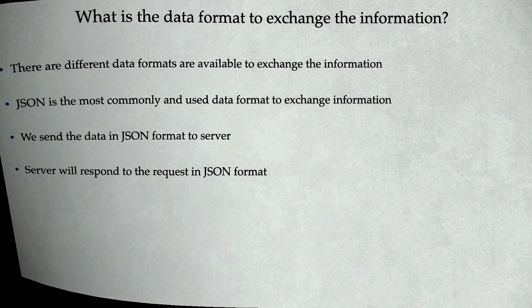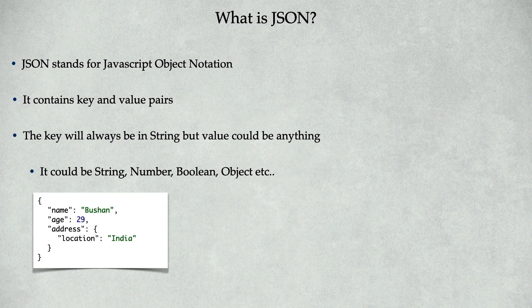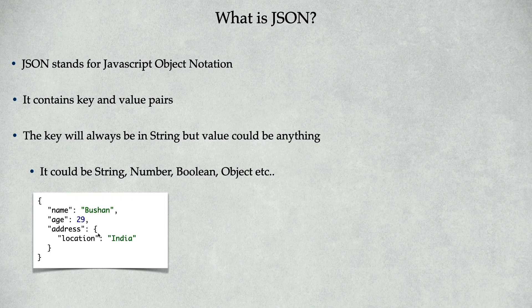So what is JSON? JSON stands for JavaScript Object Notation. It contains key-value pairs — just like in Java, HashMap and Map contain key-value pairs. Similarly, JSON also contains key-value pairs. In JSON, the key will always be a string, but the value could be anything — it could be a string, a number, a boolean, or even an object. Here is a sample JSON data format: the left-hand side is the key and the right-hand side is the value. Keys are always strings, but values can be strings, numbers, or even objects.